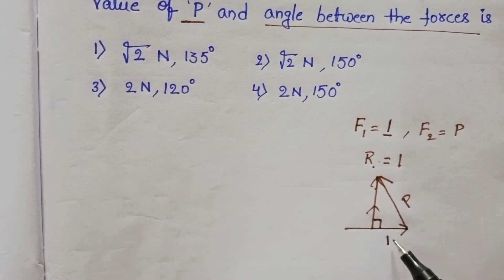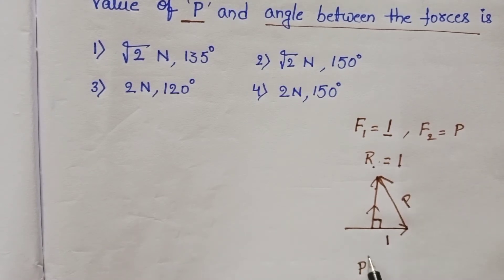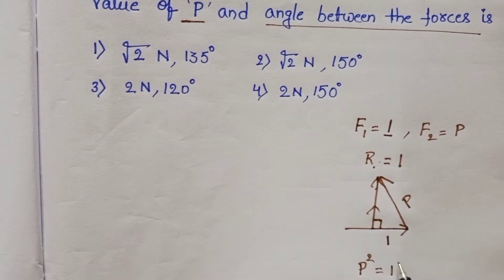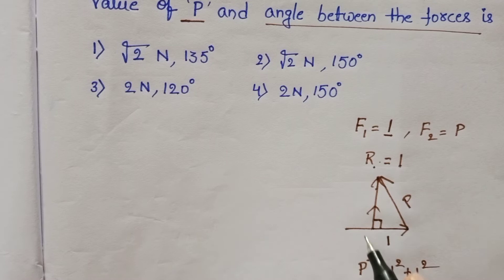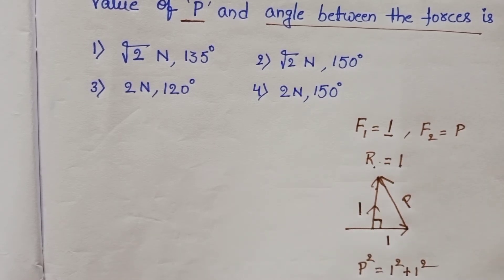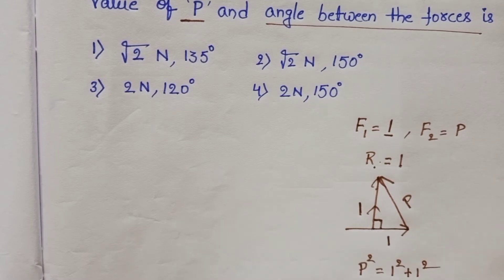Hypotenuse and these two are sides. P square is equals to 1 square plus 1 square. Why? Because resultant is equals to 1, then P is equals to square root of 1 plus 1, which is 2. So P value is root 2. Now we want angle.